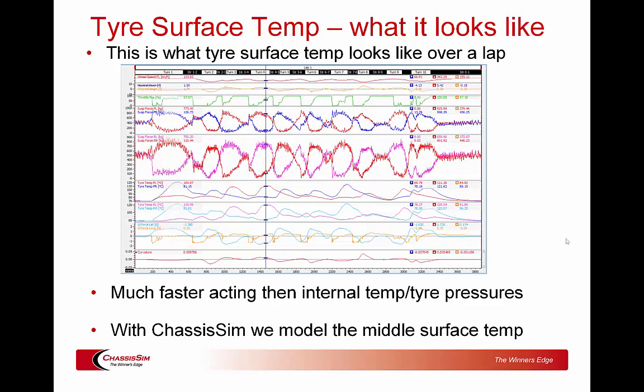Looking at what tyre surface temp looks like over a lap: this is some simulated race data from an old live axle supercar. Since that formula is now effectively defunct, I'm quite happy to show you the scalings. The big thing about tyre surface temp versus tyre pressure is it's a lot faster acting — that really is the key difference between the two. Where tyre pressure and internal temps built up over a series of laps to reach a steady state, tyre surface temp varies a lot more quickly, and we'll talk about the significance of that shortly.